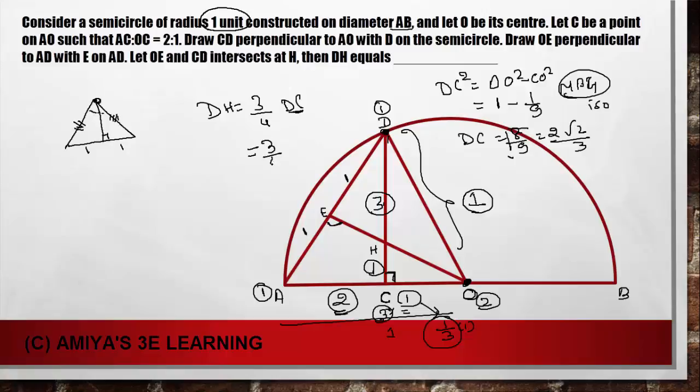Now we have to solve our question. 3/4 of DC that is 2√2 divided by 3. 3 cancel out, 2 cancel out, and we get √2/2. So our DH is 1/√2. And this is our answer.